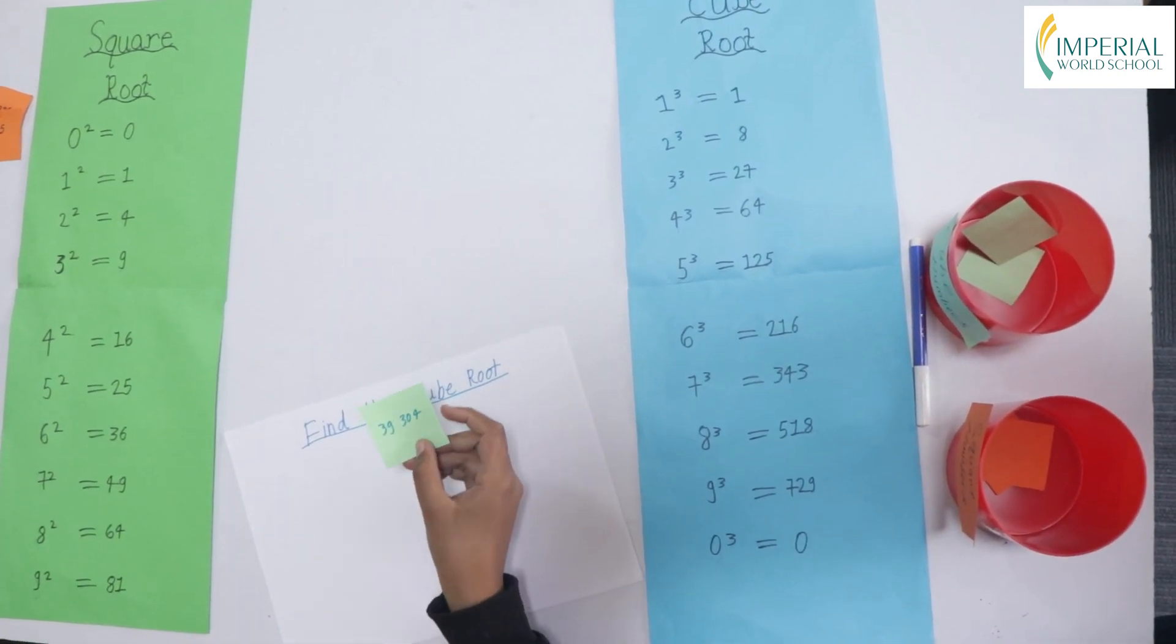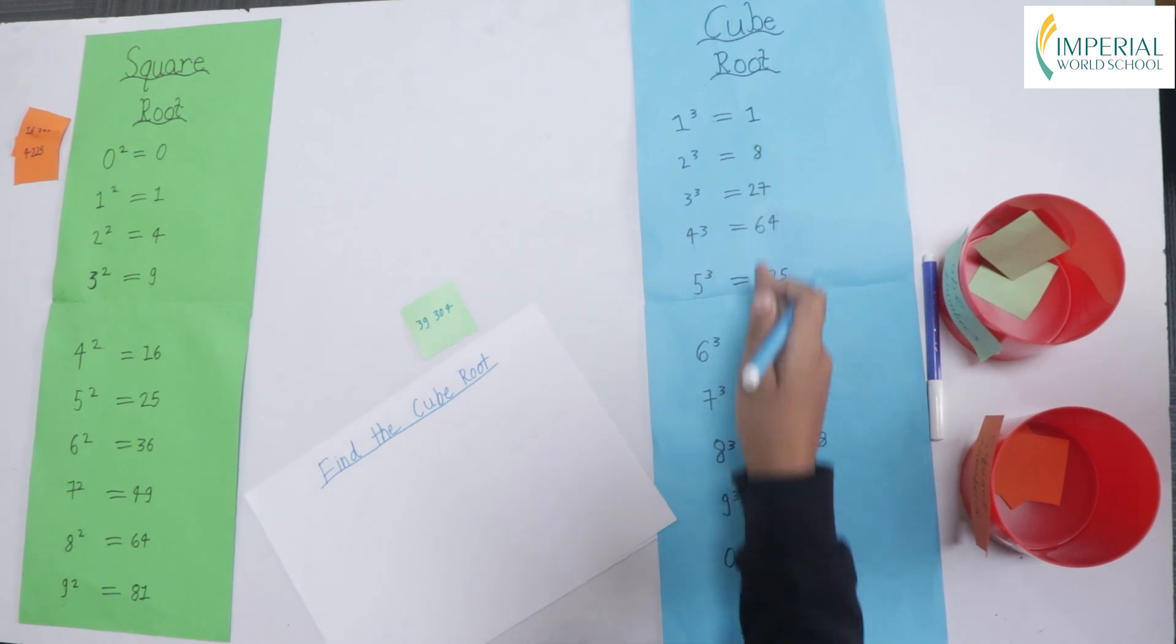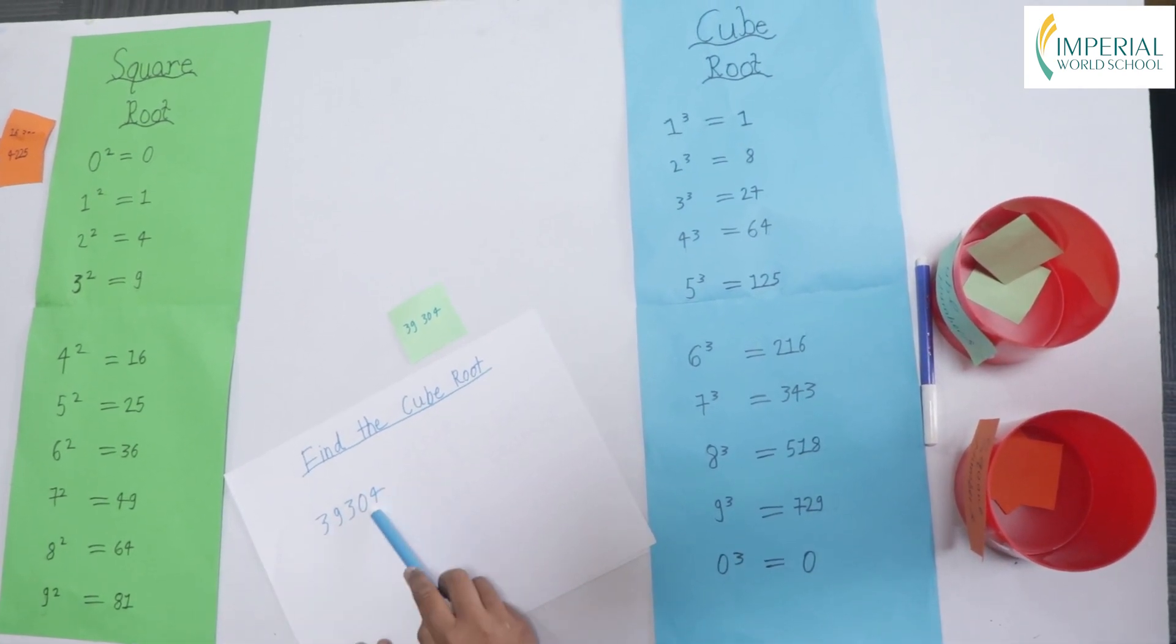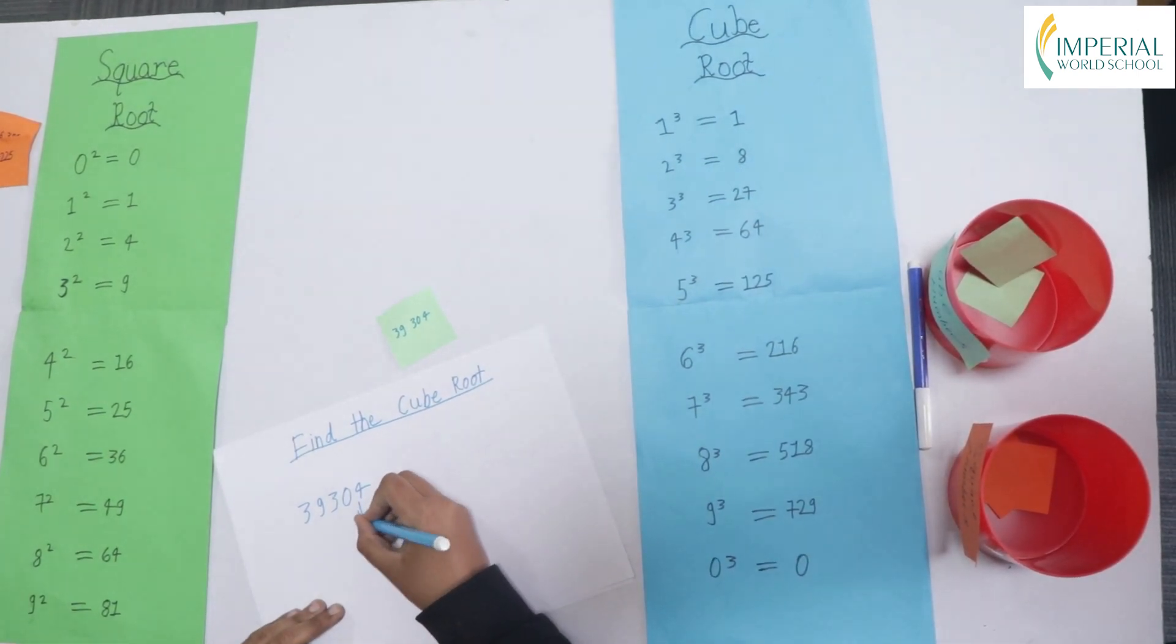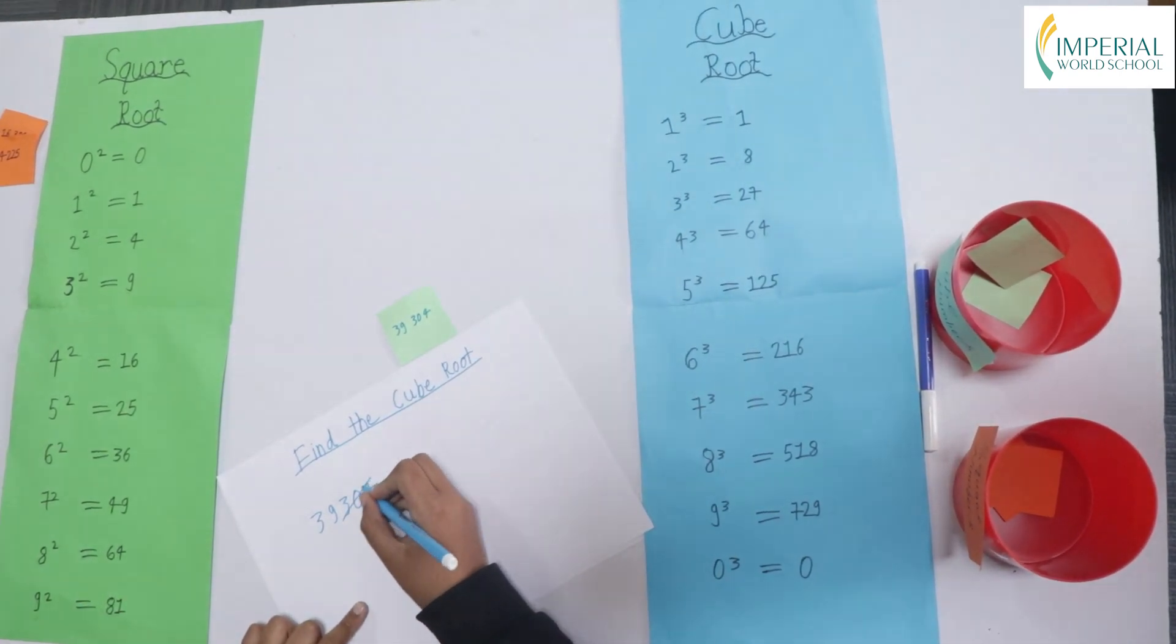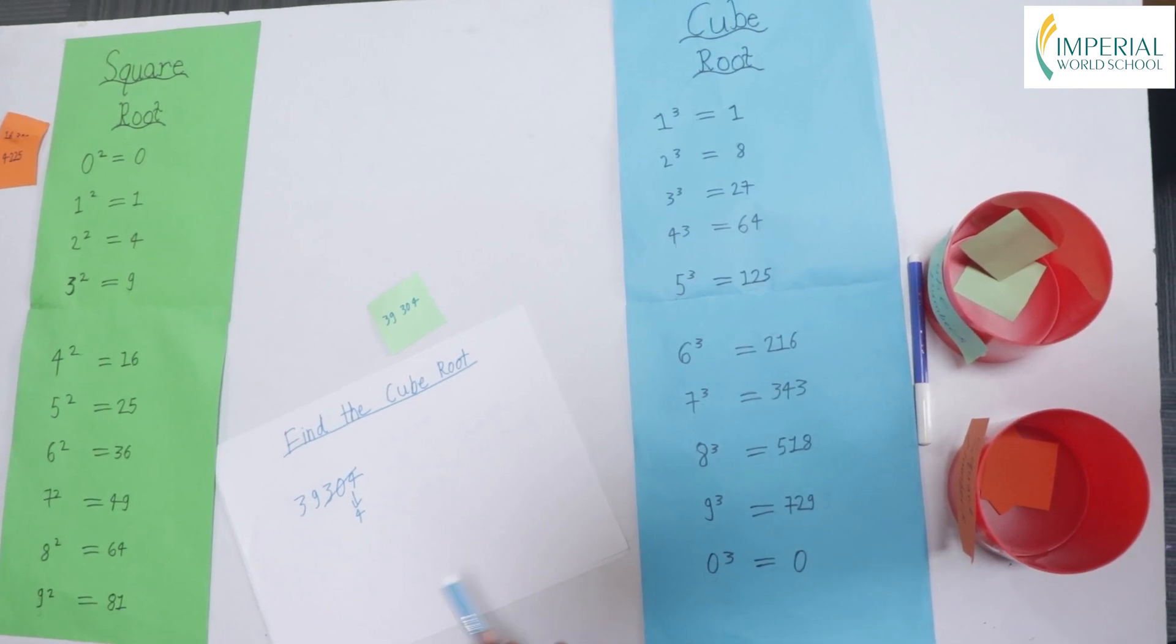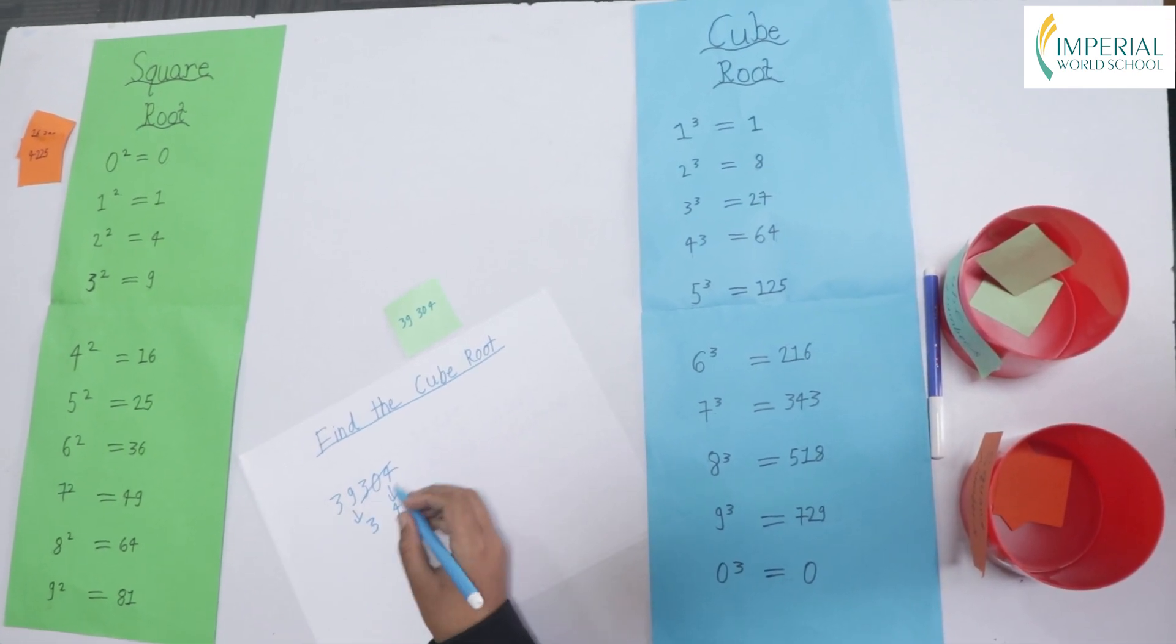Okay so the number is 39304. So finding cube root is pretty easy because all the last numbers are all different from each other. Now which number is the closest to 4? So over here it is 4 itself. So we write 4. Now instead of cutting 2 numbers we cut the last 3 digits. So now we are left with 39. So we use the same process. Which is the closest to 39 without exceeding it? So it is 3. So we write 3 over here. And the answer is 34 cube.